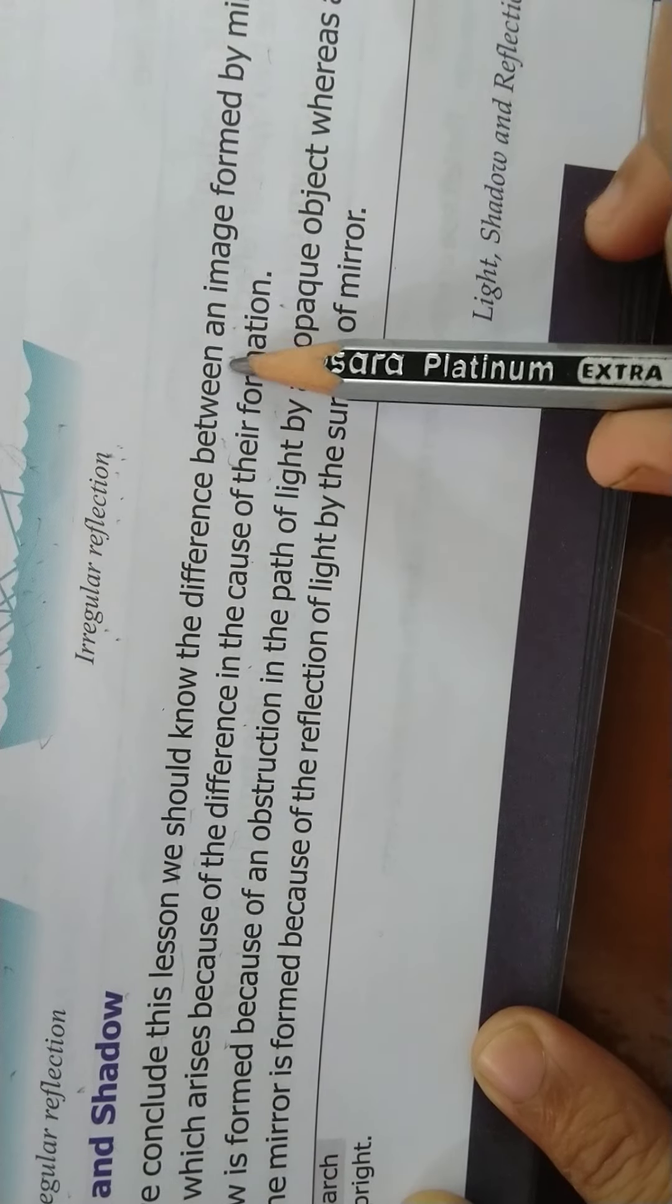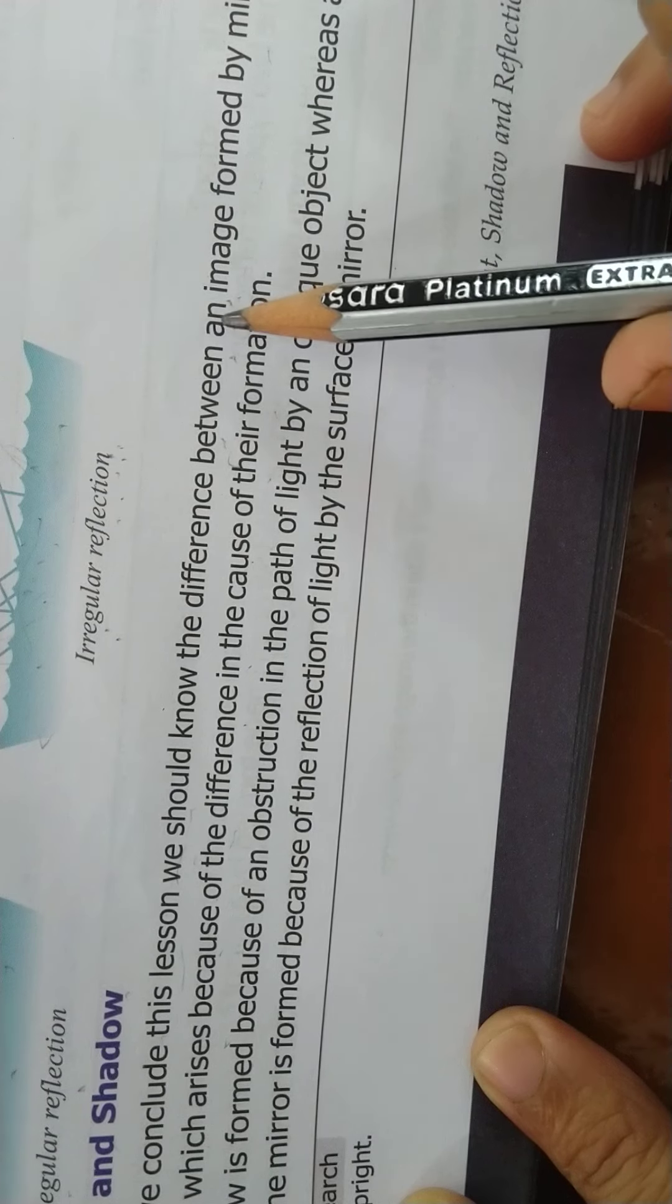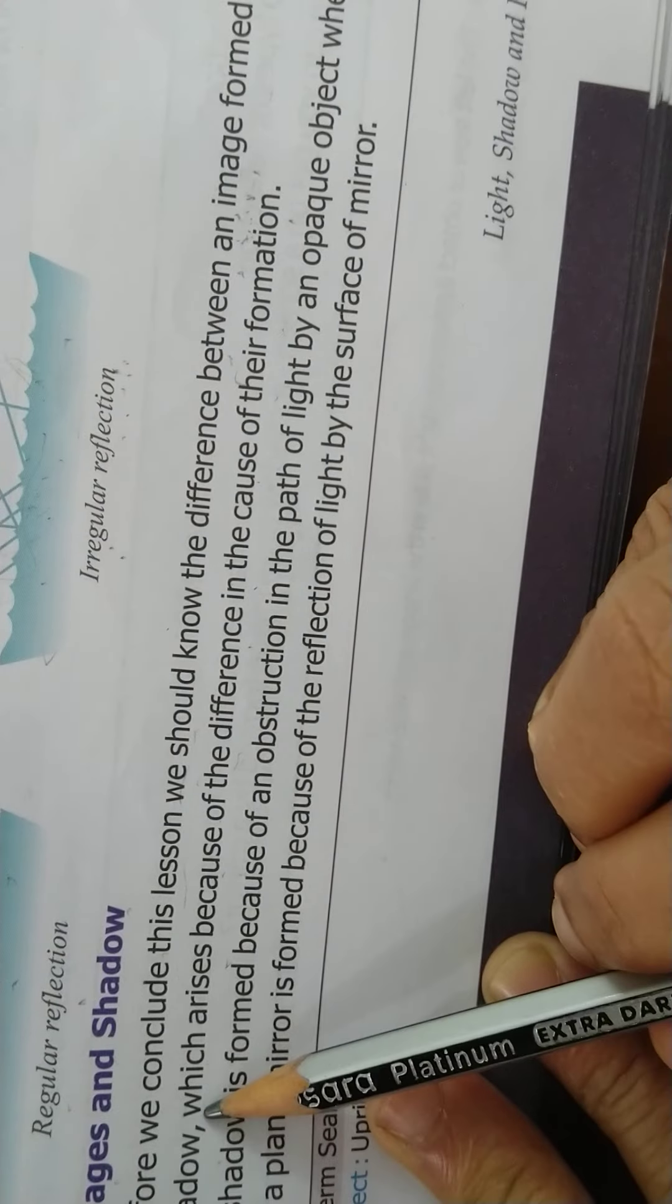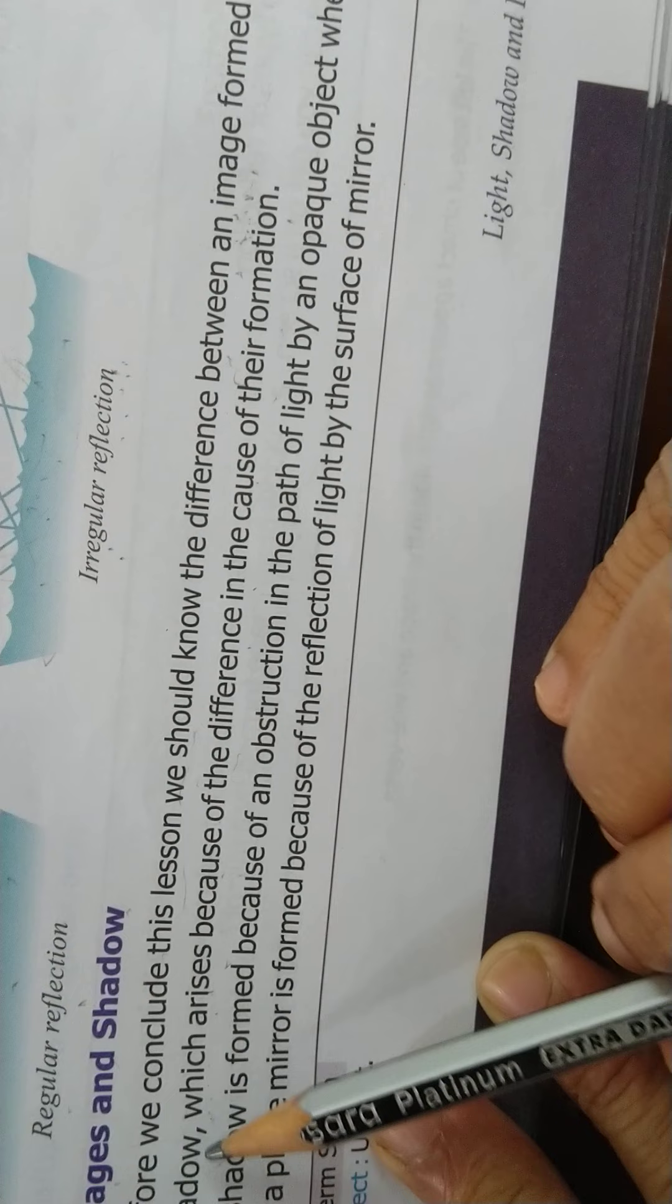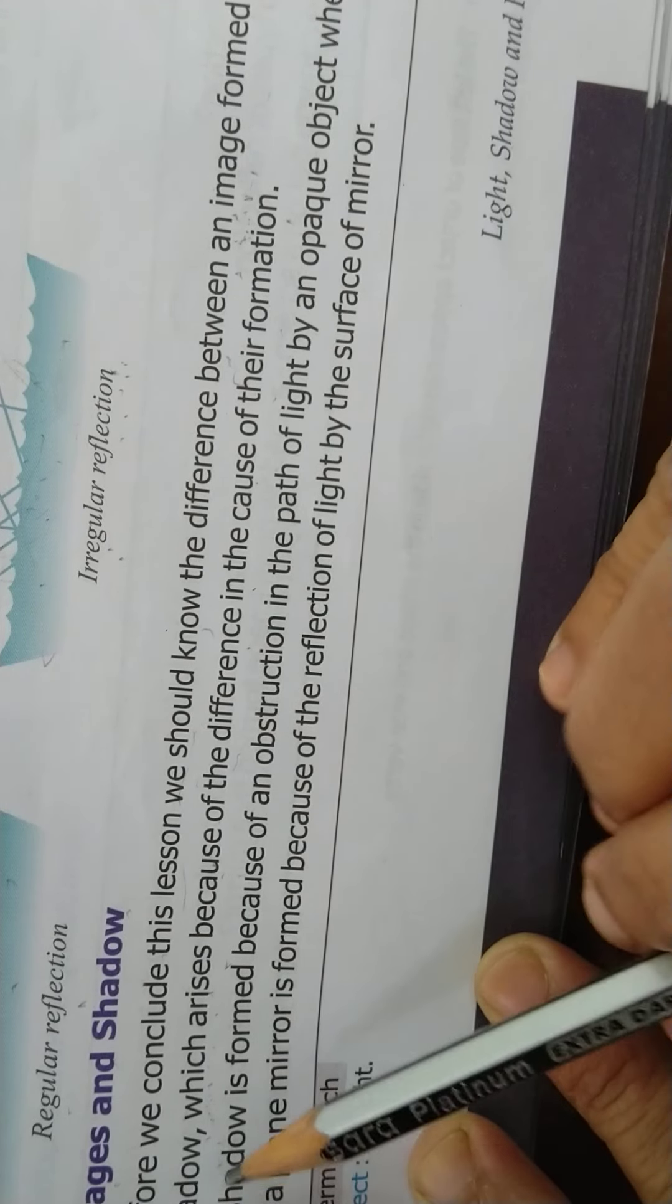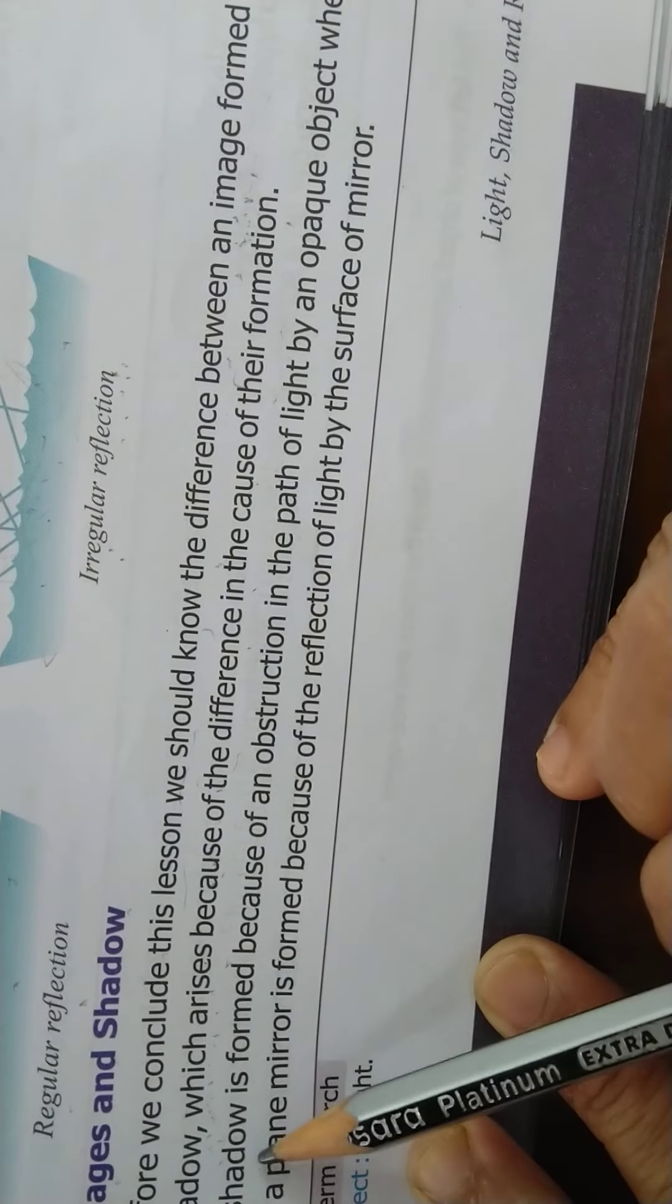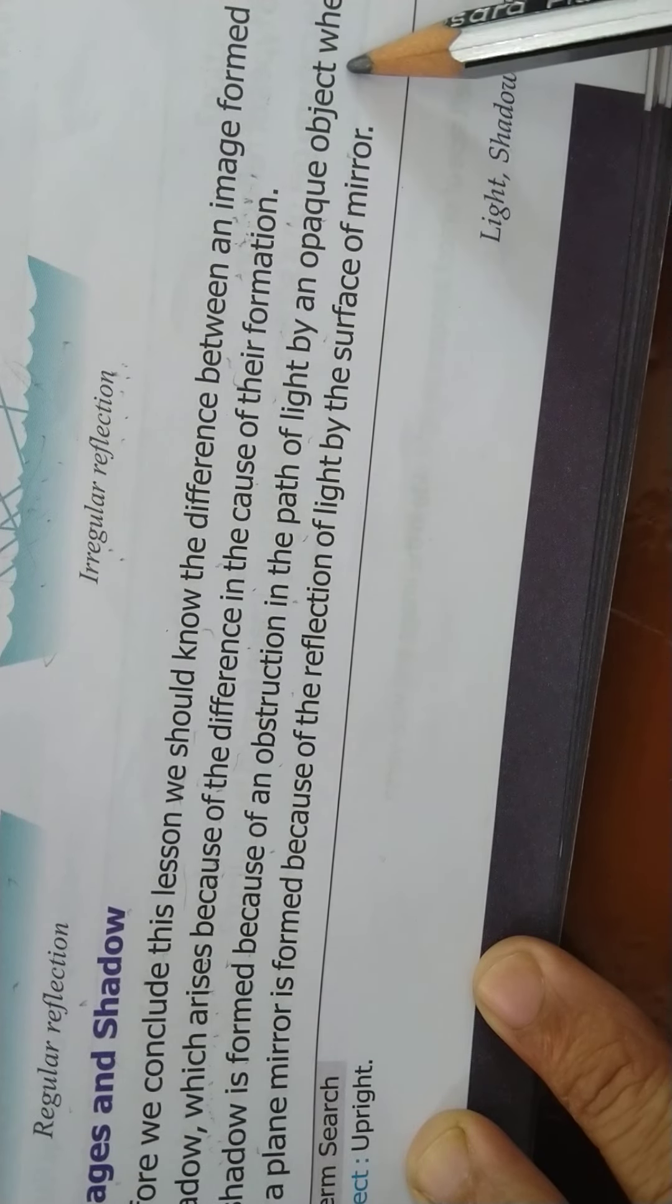Now image, you know when the light falls, then it is reflected in our eyes and then image is formed. And shadow, shadow when the light falls on an opaque object, then shadow is formed behind that opaque object. When opaque object comes in the path of light, then shadow is formed. A shadow is formed because of an obstruction in the path of light by an opaque object.